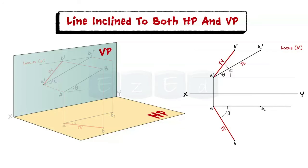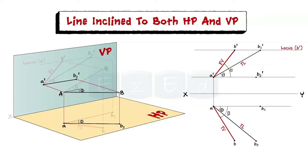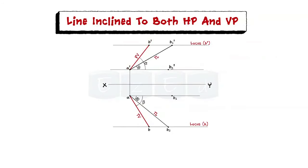This problem can also be solved by considering line AB parallel to HP and inclined to VP by angle phi. Projecting line AB gives its front view as A'B2' and its top view as AB2. Now keeping point A fixed and rotating line AB by angle theta with respect to HP, we get the locus of point B. Here A'B' and AB are the required front view and top view of line AB inclined to both HP and VP. A'B1' and AB2 are the true lengths of line AB. The angle made by front view A'B' with XY is called the apparent angle alpha, and the angle made by top view AB with XY is called the apparent angle beta.